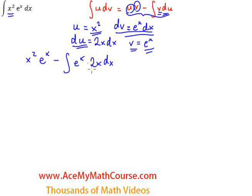All right, so now here I have a 2, you can just whisk it out, just a constant, so I can take it out of the integral. Now I'm just going to rewrite the x squared e to the x minus 2 times the integral, and inside we have e to the x times x dx. And because of this x, of course, we're going to have to integrate by parts again.